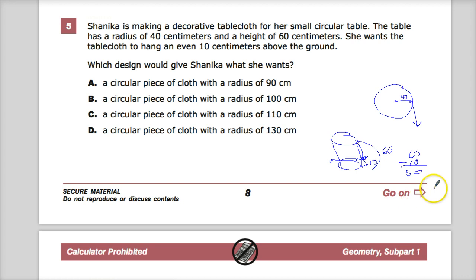Now the nice thing about a circular tablecloth is the distance that you want it to go down, you have to make sure that it's whatever the radius is plus that distance.